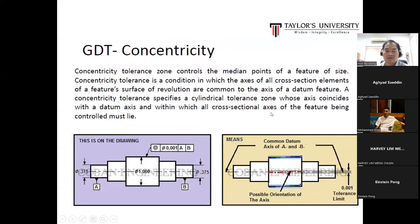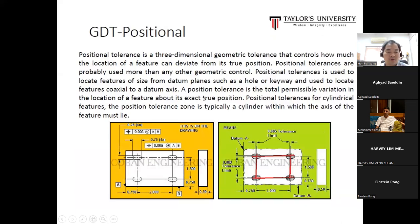Concentricity tolerance controls the median points of a feature of size. Concentricity tolerance is a condition in which the axis of all cross-section elements of a feature surface of revolution are common to the axis of a datum feature. Concentricity tolerance specifies a cylindrical tolerance zone whose axis coincides with a datum axis and within which all cross-sectional axes of a feature being controlled must lie. Positional tolerance is a three-dimensional geometry tolerance that controls how much the location of a feature can deviate from its true position.